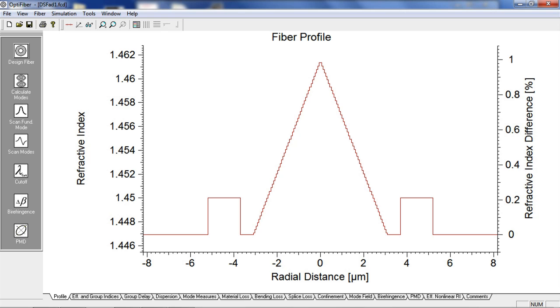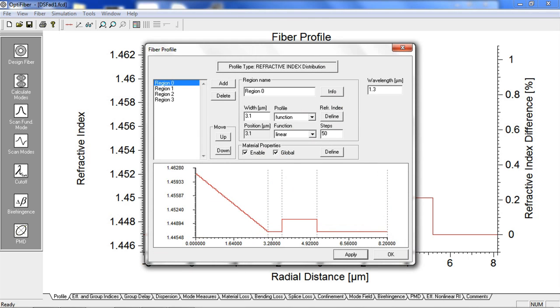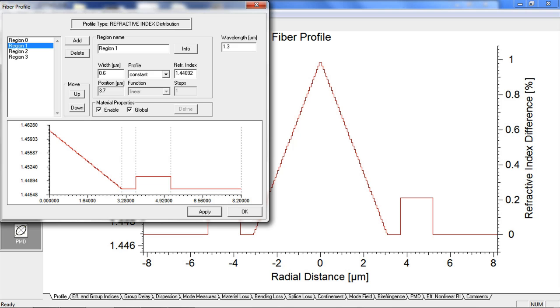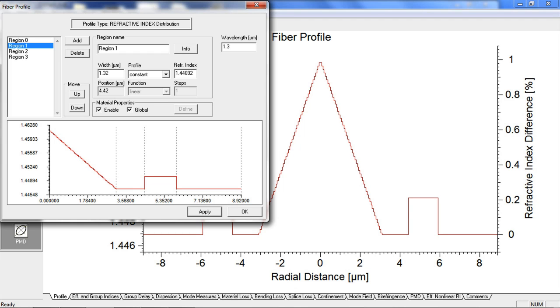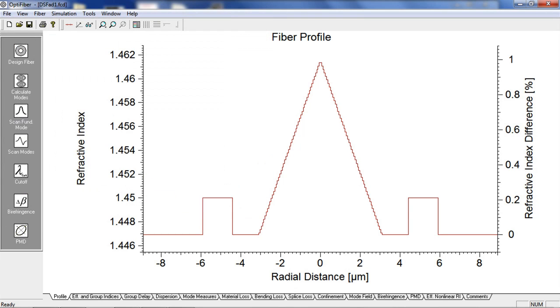Now let's go back to the fiber profile. Select the Design Fiber button and set the width of region 1 to 1.32 microns. Click Apply. Here we can see that the width of the optimized layer increases.